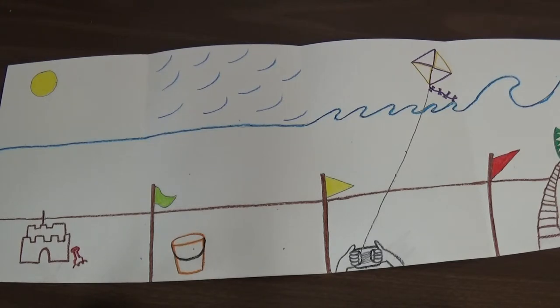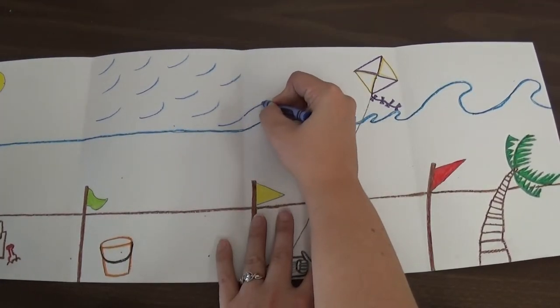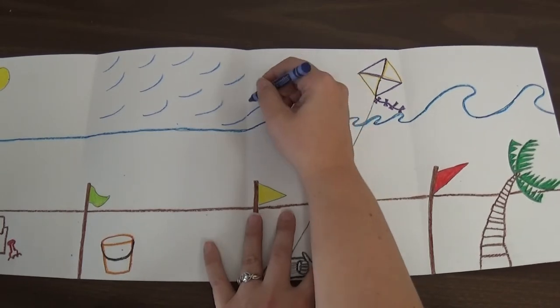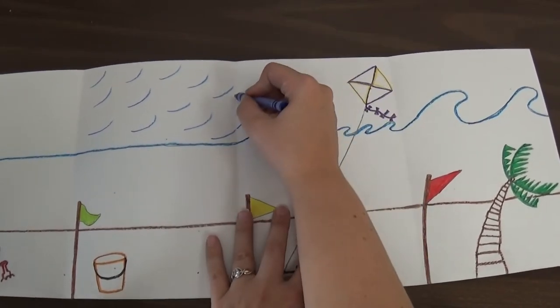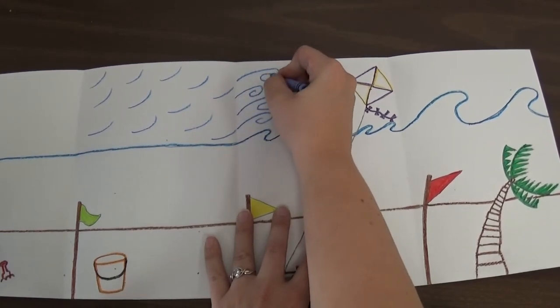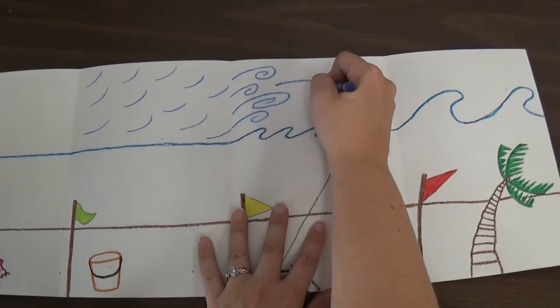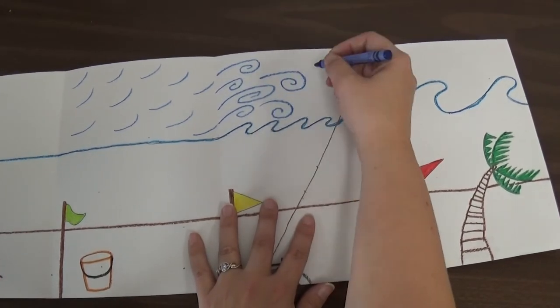And then in the next one, it's a strong breeze. We're going to add lines to show it's a strong breeze. Maybe they're going to curve a little more. There's a lot more wind happening. My wind is getting strong. It's starting to whip around in different directions, kind of like that Starry Night wind. It's a little bit stronger.